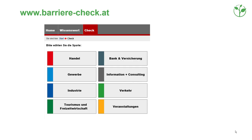Screenshot of www.bar-e-check.at shows different branches that can be used for the Barrier Check, such as Trading, Industry, Tourism, Banking, Consulting, Transport, and Events. The user can choose a branch, and then the online tool suggests the standard service chain for that branch.